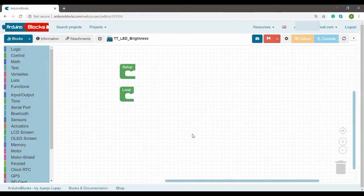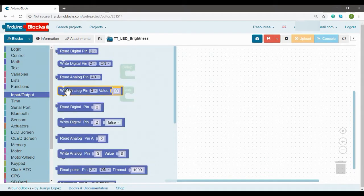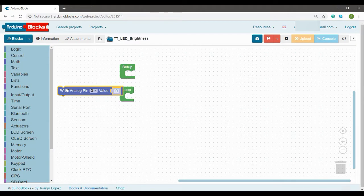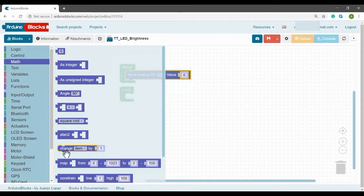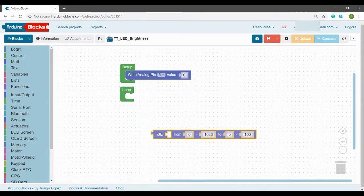Now moving to LED brightness control using potentiometer. From input output section we will take read analog pin and initialize with zero value. Next part is a little bit tricky as we have connected the potentiometer to analog zero. The analog value will be in the range of 0 to 1023 whereas PWM values range from 0 to 255. So in order to match these two different ranges we will be using map command block.